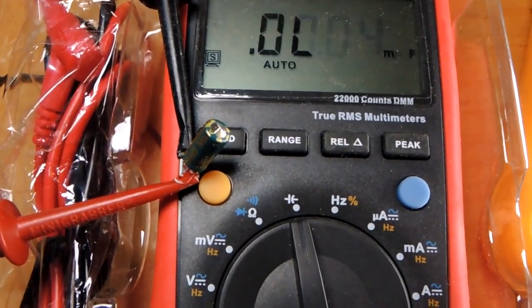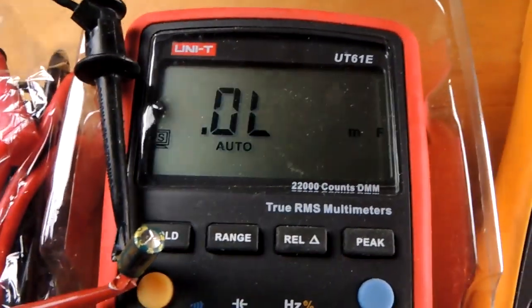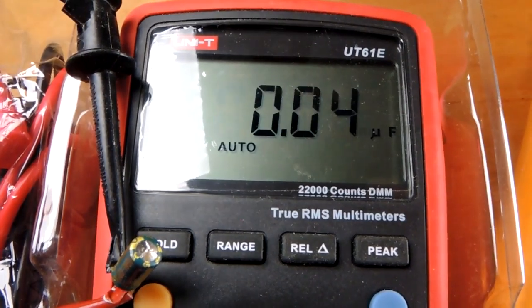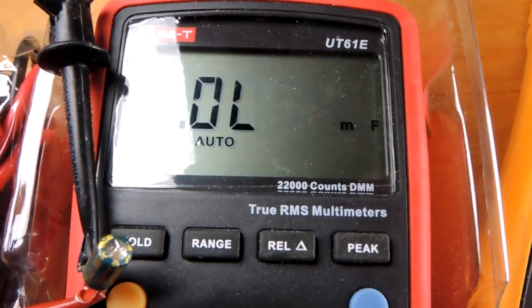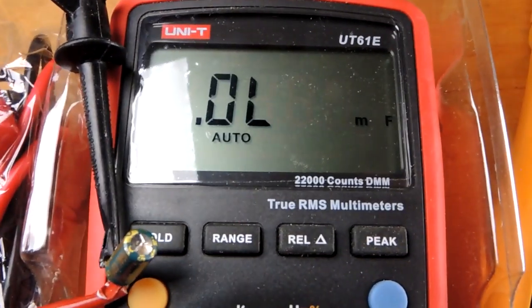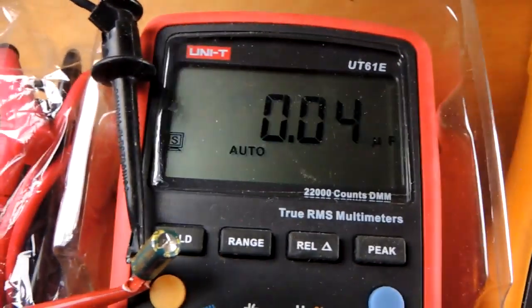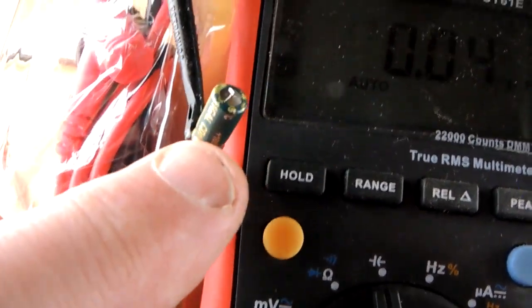It's marked as a 4.7 microfarad capacitor, but the meter seems quite confused. It varies between overload and 0.04 microfarads, which is one hundredth of the value it's supposed to be. So something's very wonky going on with this capacitor.